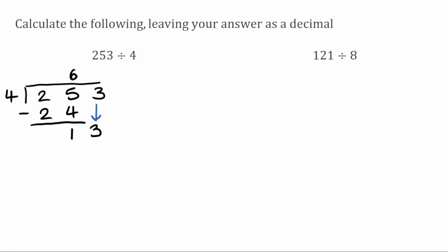We're going to bring down this 3, so putting it next to the 1 we've now got 13. How many times does 4 fit into 13? That'll go three times because 4 times 3 is 12. We take them away: 13 take away 12 leaves us with 1. We've reached the last digit, so our answer so far is 63 remainder 1.